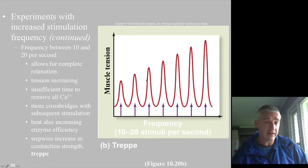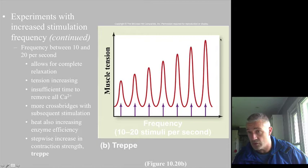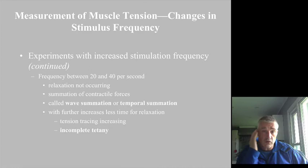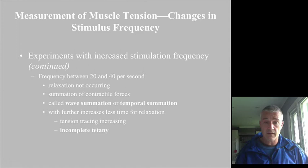Treppe is something to understand well. A frequency between 10 and 20 stimulations per second leads to an increasing muscle force up to full recruitment — that is the treppe concept. As you start getting to higher frequencies of 20 to 40 stimulations per second, you're not able to have any relaxation occurring.